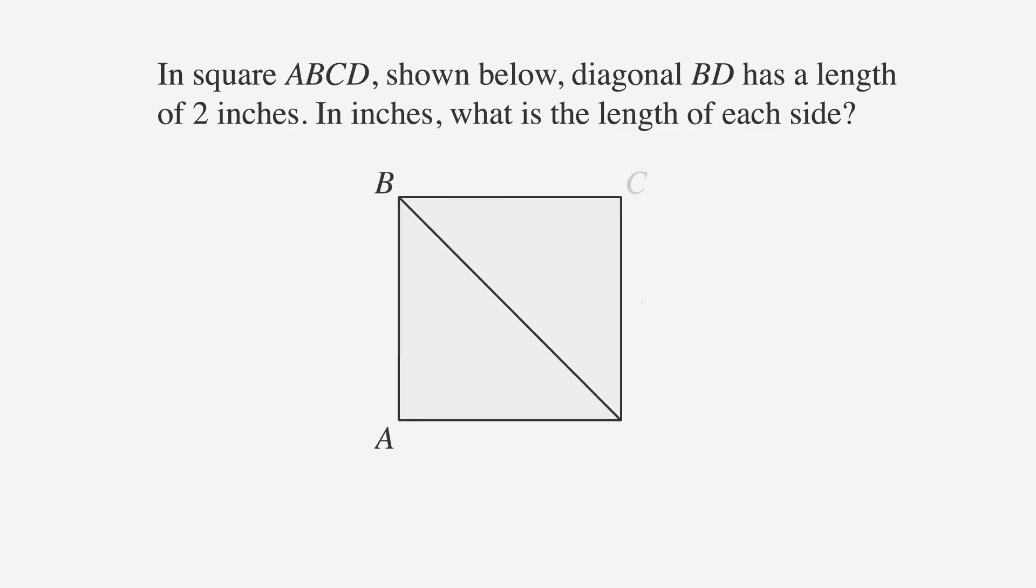Let's solve some ACT problems using these special triangles. First, we'll solve a problem involving a 45-45-90 triangle. In square ABCD shown below, diagonal BD has a length of 2 inches. In inches, what is the length of each side?